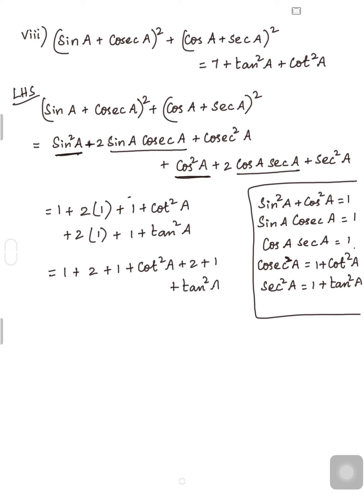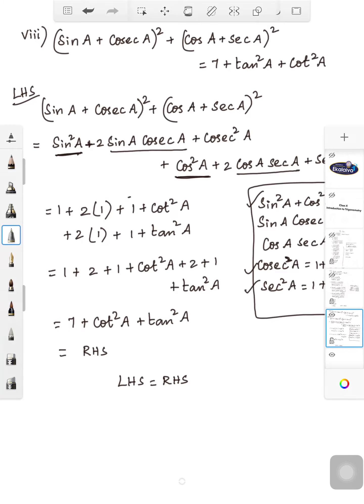Now add all the numerals: 1 + 2 = 3, plus 1 = 4, plus 2 = 6, plus 1 = 7, plus cot²A + tan²A. So we have proved that (sinA + cosecA)² + (cosA + secA)² = 7 + cot²A + tan²A. LHS is equal to RHS. These three basic identities allow us to solve these types of problems. Hope it is clear, children.